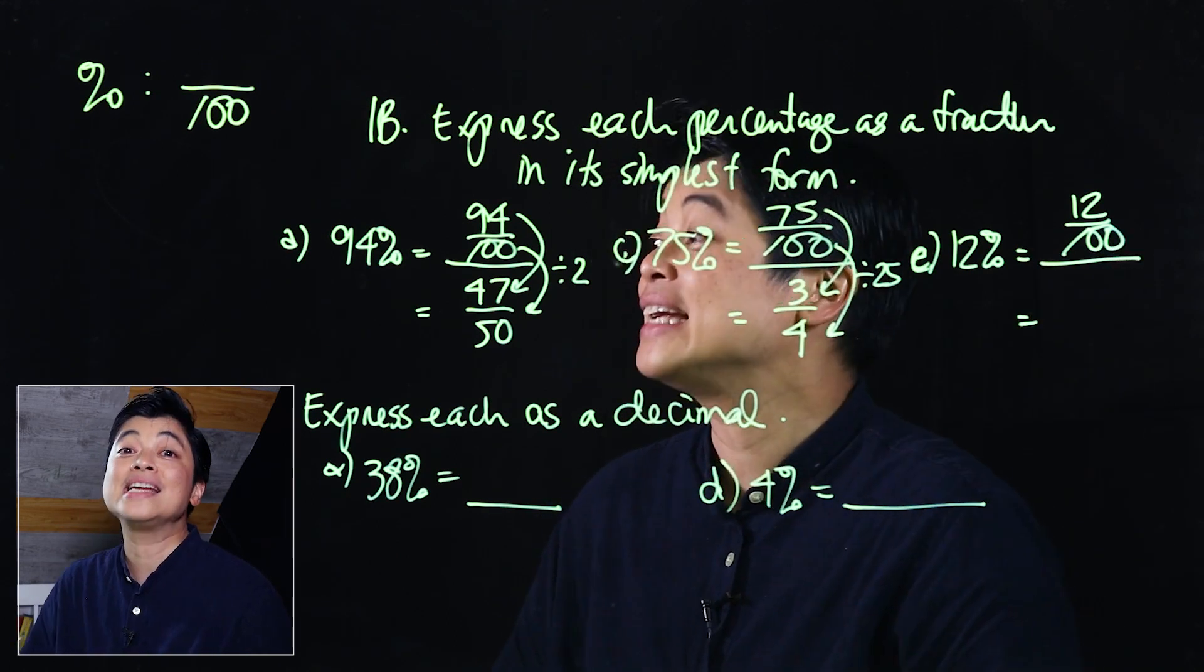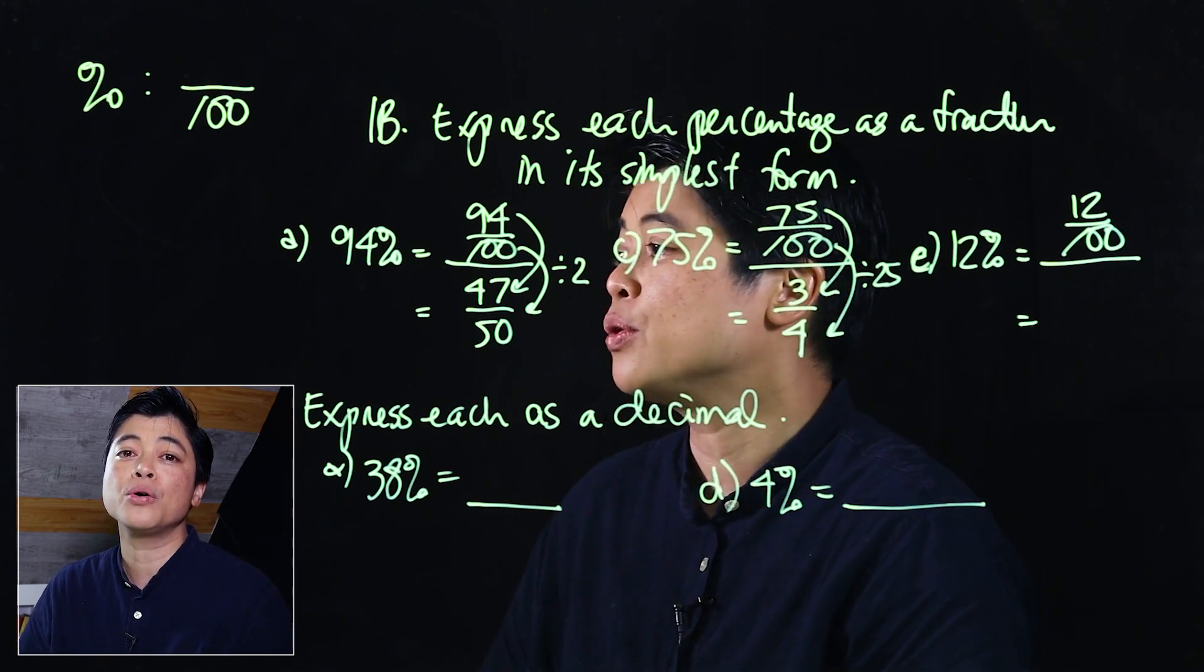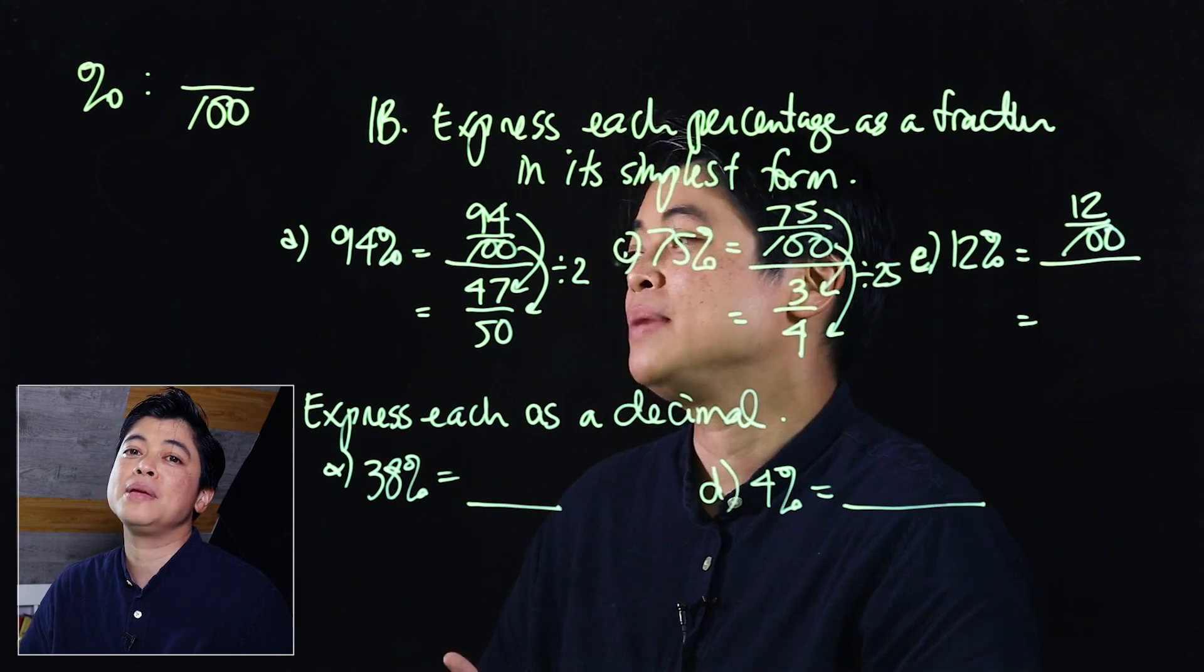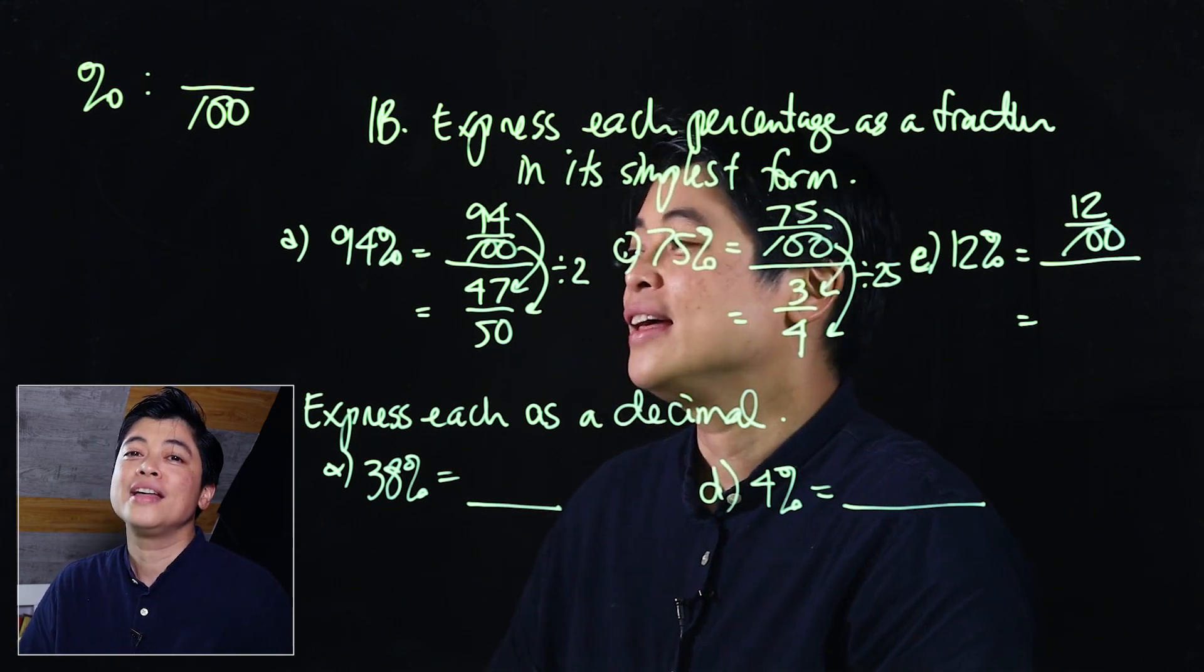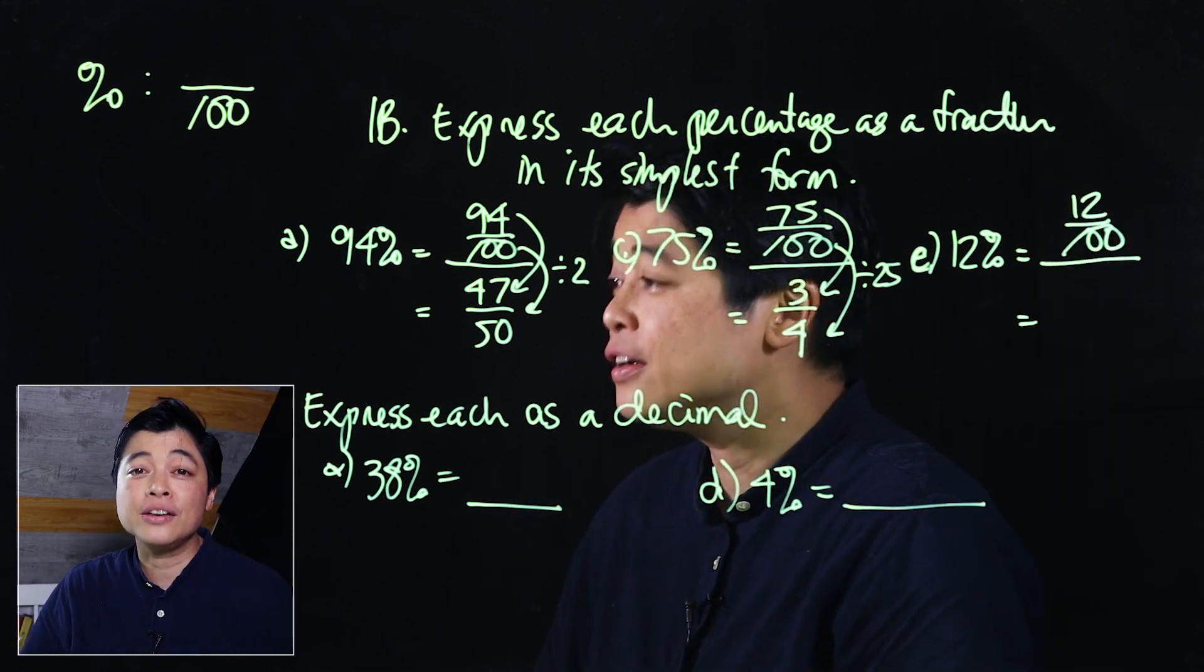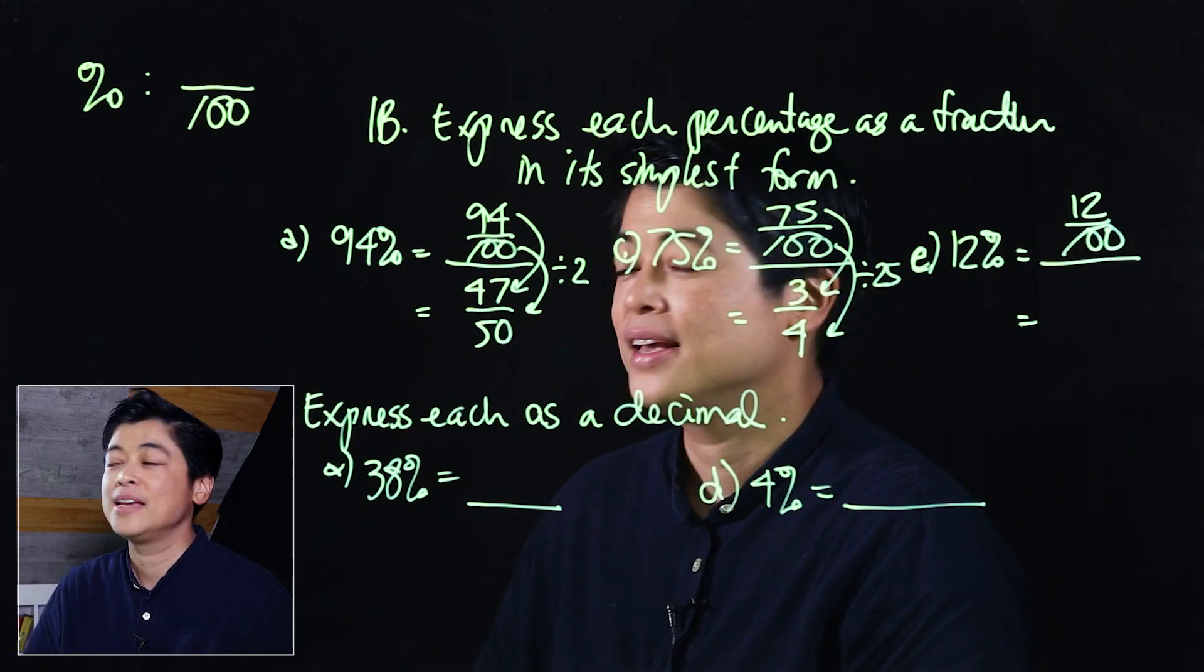But being that we're now in grade 5, we should know that 12 and 100 are both divisible by 4. That means this is divided by 4, which is 3 over 25.